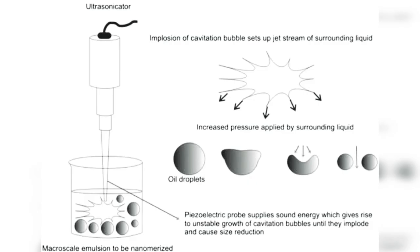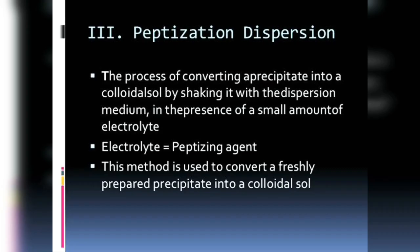The next method is the ultrasonic dispersion method. Here, ultrasonic sound waves are utilized to break down bigger size particles into colloidal size particles. Sound waves of frequency more than 20 kilohertz are called ultrasonic sound waves. These waves can break down particles, converting a suspension into a colloidal solution. For example, a colloidal solution of mercury salt can be prepared by this method.